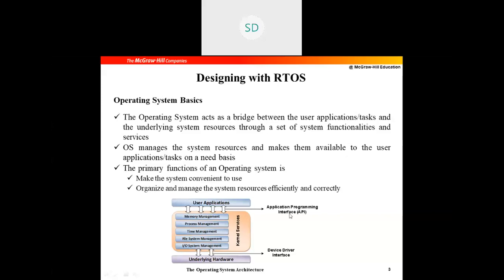Looking at the architecture of the operating system: at the top you have user applications, and at the bottom you have the underlying hardware. Many applications at a particular instance require hardware resources, which must be shared equally among all applications. This is where the OS — what we call kernel services — comes into the picture. These kernel services include memory management, process management, time management, file system management, and input/output system management.